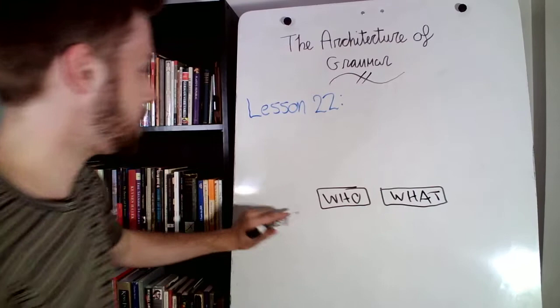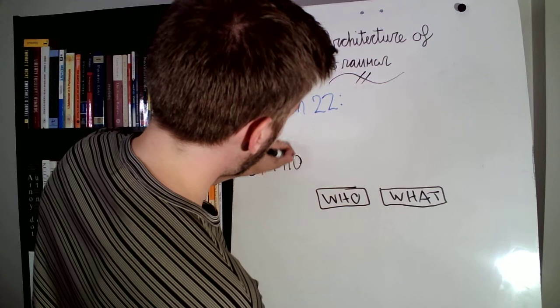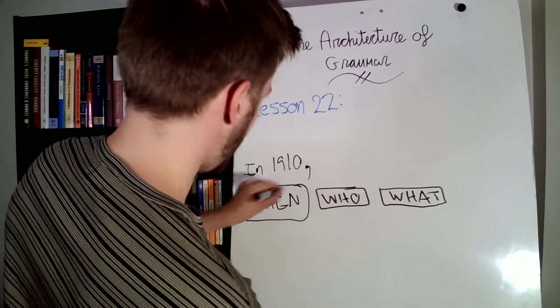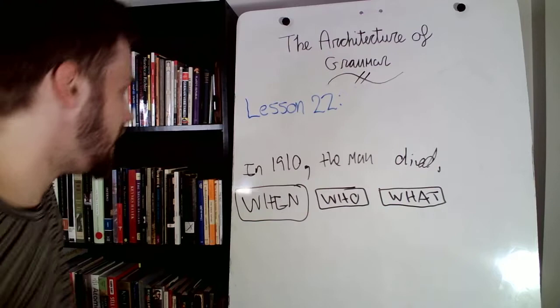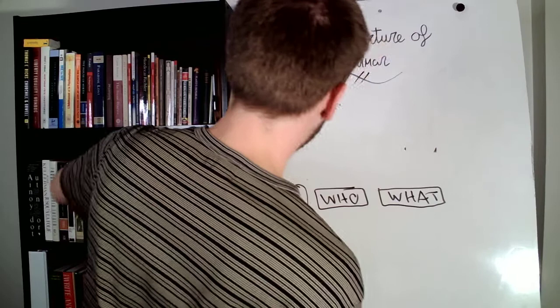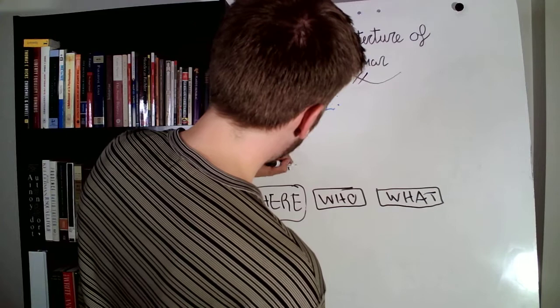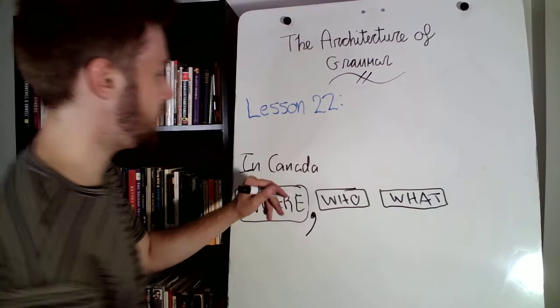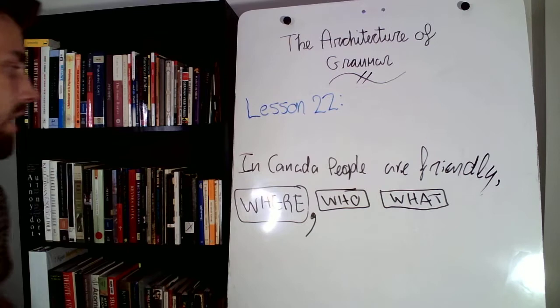And so, before the who and the what, we might have all kinds of phrases. Whether it be, I don't know, in 1910, comma, that's when. In 1910, the man died. Now, it could also be where. It could be where. So, in Canada, and then, comma, in Canada, people are friendly. So, that's where.